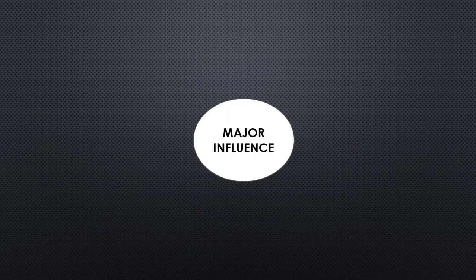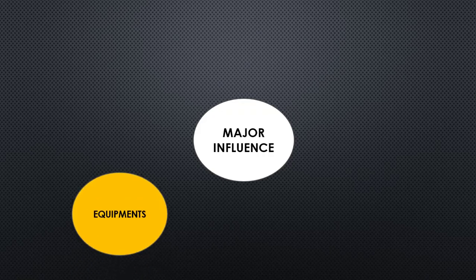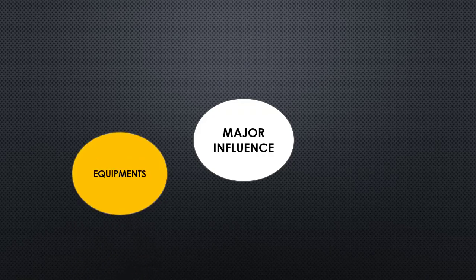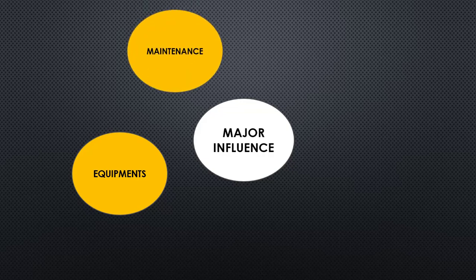Now let us see the major influencing areas. One such area is equipment — static equipment such as pressure vessels, tanks, and drums, and rotary equipment such as pumps, compressors, and turbines. A piping design engineer should have knowledge about these equipment while designing piping. The second influencing area is maintenance. Instruments, valves, equipment, and parts of piping are frequently removed for maintenance activities such as cleaning and washing, so a piping design engineer must consider providing provisions for maintenance of these items.